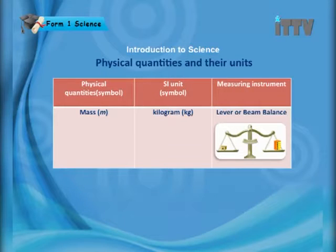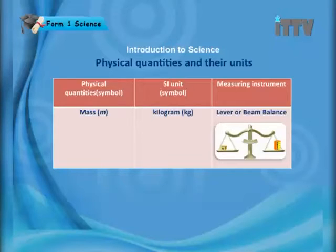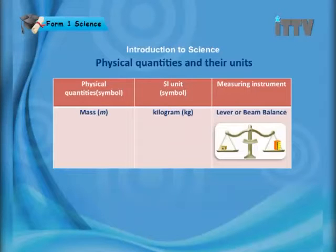The next physical quantity is mass. The symbol for mass is m. You measure mass using the SI unit kilogram, which is kg. The tool used to measure mass is a lever or beam balance.